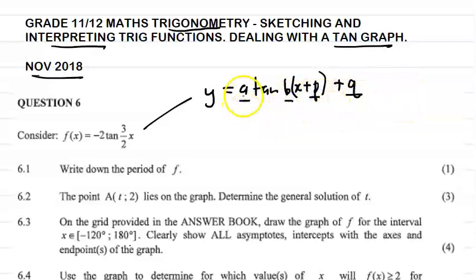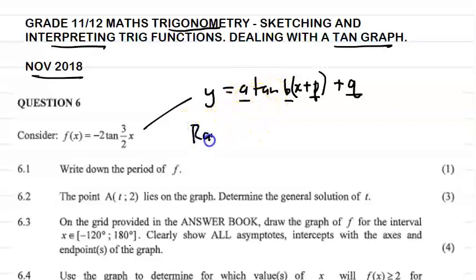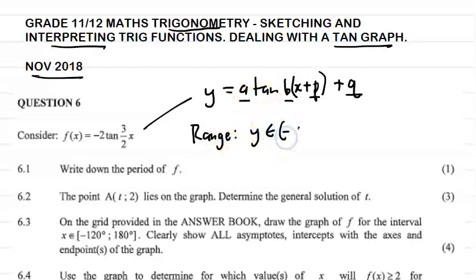Let's talk about 'a' first. Looking at 'a', we'll talk about the shape of this particular function. It's important to remember that the range of our tan graph is from minus infinity to infinity. So it doesn't have a maximum or a minimum value. Therefore, there's no amplitude in our tan graph, so they wouldn't ask us that question.